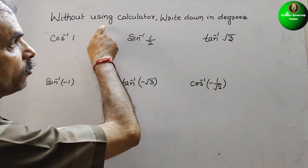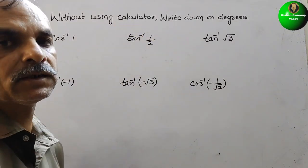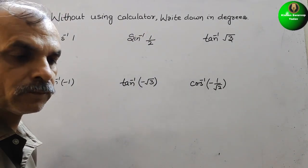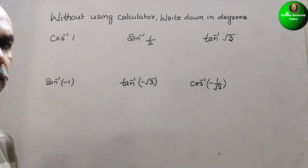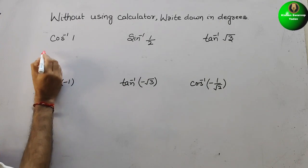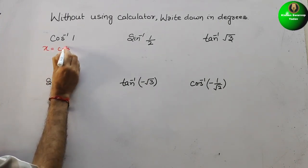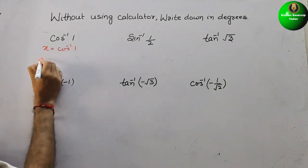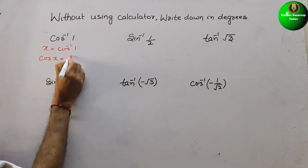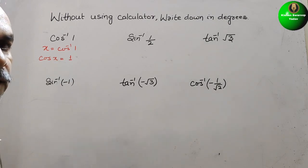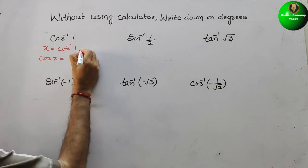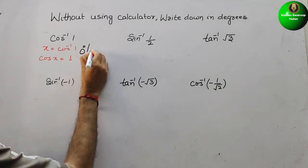The question is: without using a calculator, write down in degrees cos inverse of 1. We let x equal to cos inverse of 1, so cos x equals 1. We know that cos equals 1 at 0 degrees, or we can say 2π, which is 360 degrees.